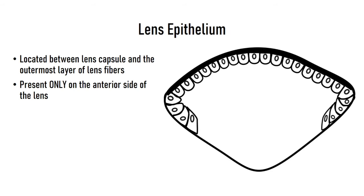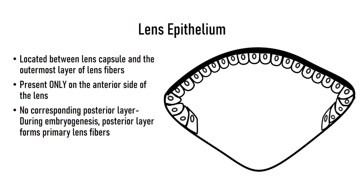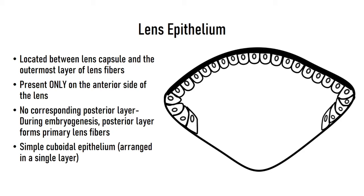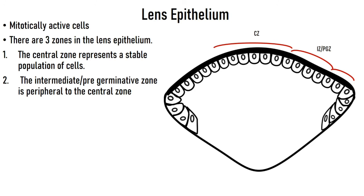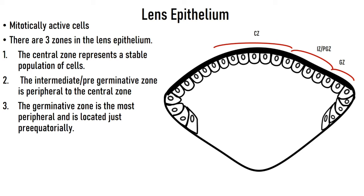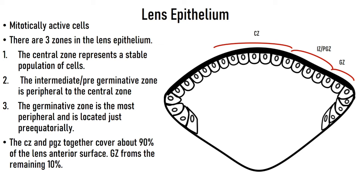Between the lens capsule and the lens fibers lies the lens epithelium, which is present only on the anterior side. There is no posterior epithelial layer because the posterior epithelium forms the primary lens fibers during embryogenesis. The lens epithelium is a single layer of cuboidal cells. Lens epithelial cells are divided into three zones: a central zone with a stable cell population, a pre-germinative intermediate zone peripheral to it, and a germinative zone just anterior to the lens equator. The central and pre-germinative zones together form about 90% of the anterior epithelial surface.